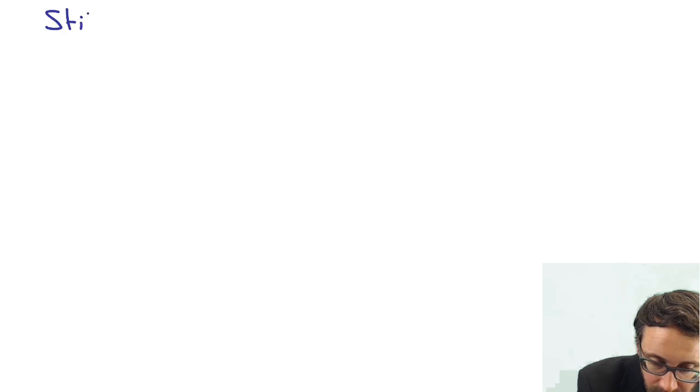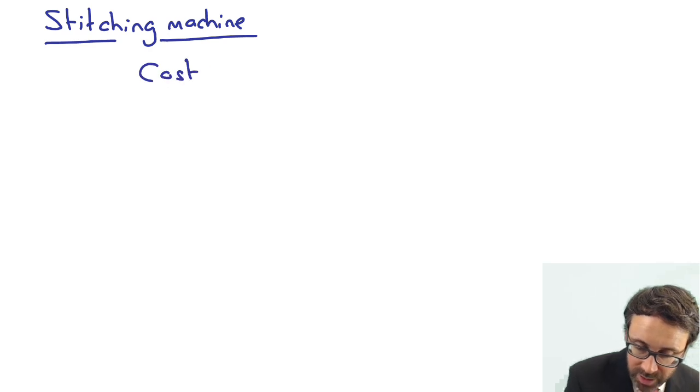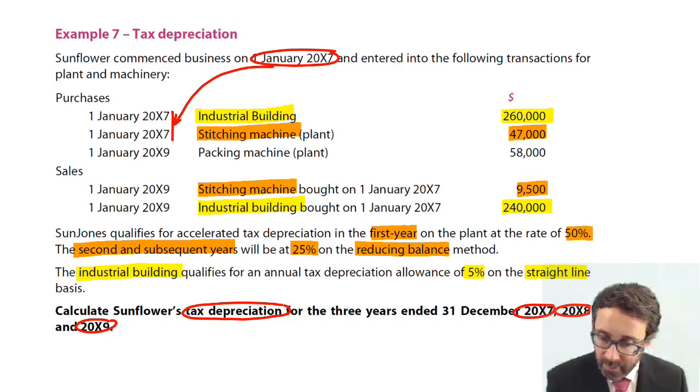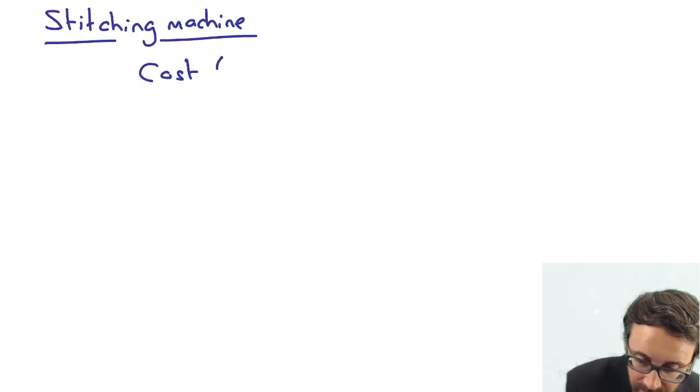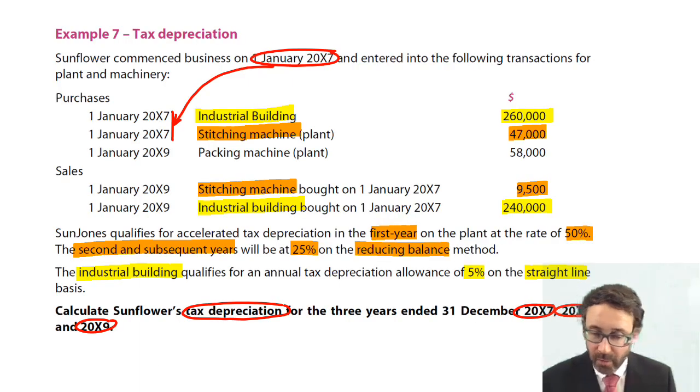What we've then got as well is our plants. So we've got this stitching machine. So again, the cost on this stitching machine is there at $47,000. Again, that was bought on the 1st of the 1st X7. So we have $47,000. And remember, what you've got here is that rule whereby you get 50% in the 1st year, and then 25% reducing balance in subsequent years.